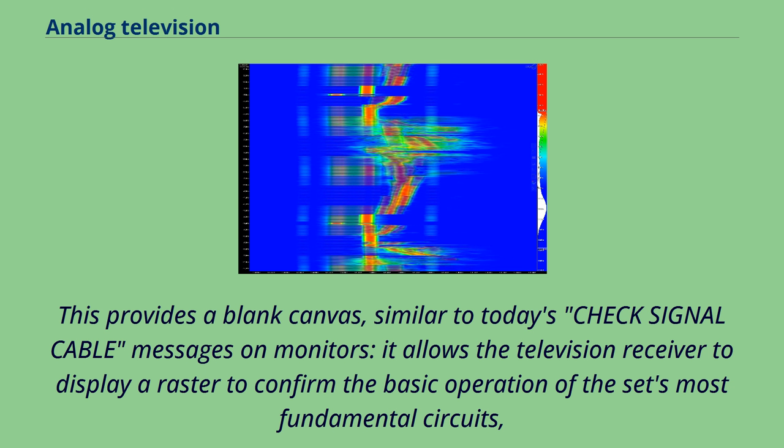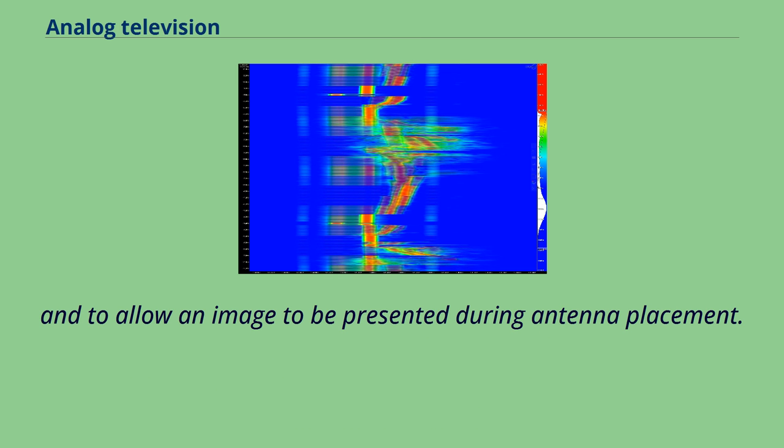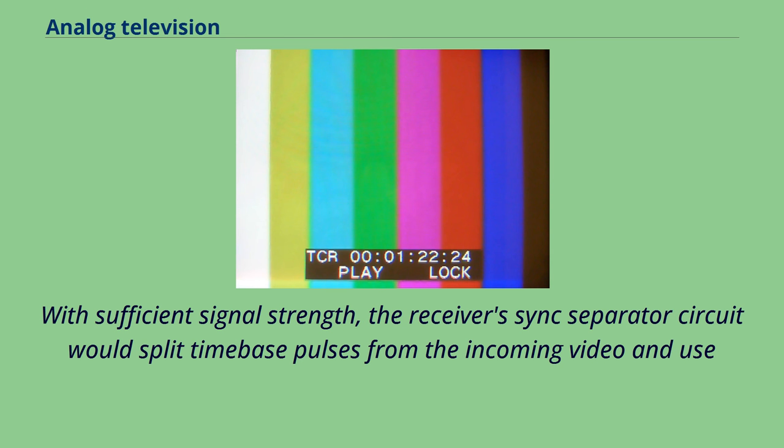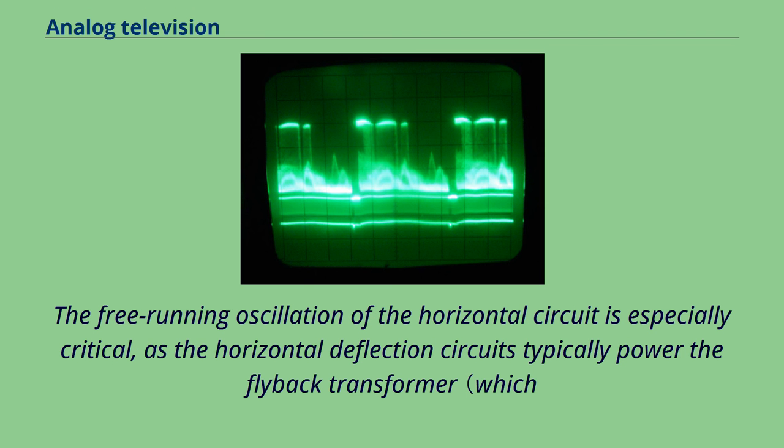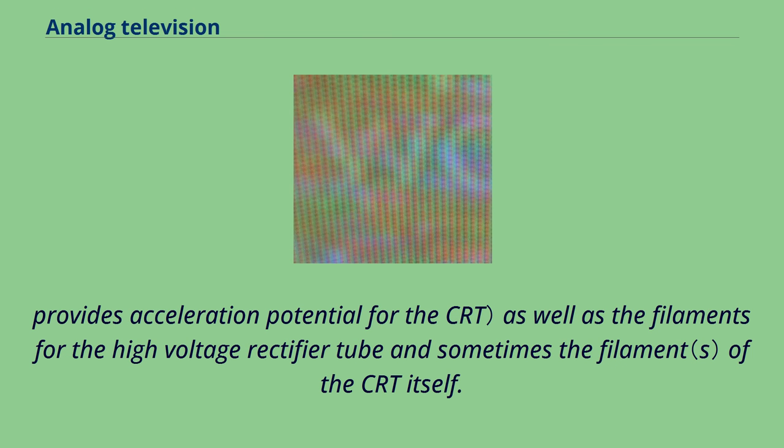The free-running oscillation of the horizontal circuit is especially critical, as the horizontal deflection circuits typically power the flyback transformer, which provides acceleration potential for the CRT, as well as the filaments for the high-voltage rectifier tube. Without the operation of the horizontal oscillator output stages, there will be absolutely no illumination of the CRT's face.